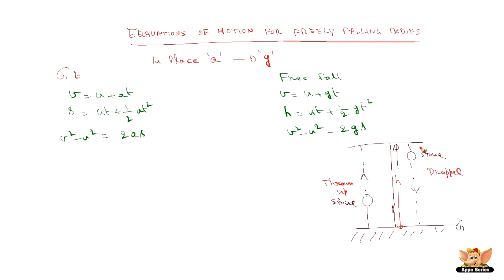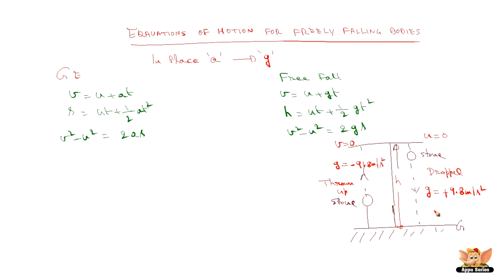When a body is falling freely — that is, when it is dropped — the initial velocity U is 0, and acceleration due to gravity G is positive, +9.8 m/s², because it accelerates downward. When it is thrown up, the final velocity V is 0, and G becomes negative, −9.8 m/s², because the velocity keeps decreasing until it reaches zero.